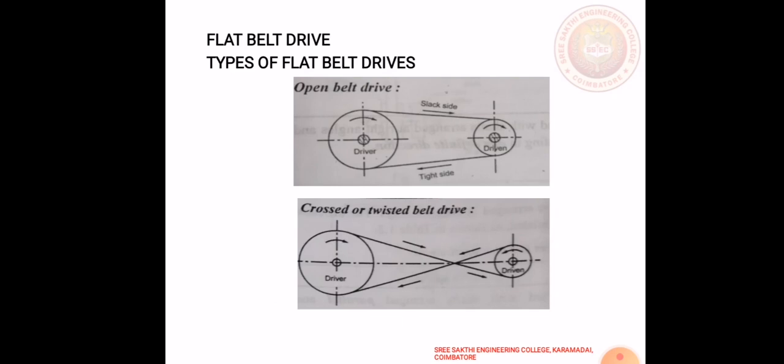We are going to see two types: open belt drive and crossed belt drive. In an open belt drive, shafts are arranged in parallel and rotate in the same direction. The driver pulls the belt from the lower side and delivers it to the upper side of the pulley, so the lower side is always the tight side and the slack is on the top side.